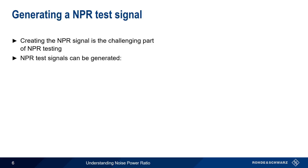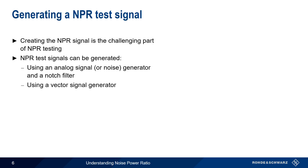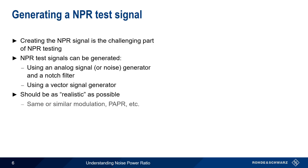There are two main ways of generating a test signal when measuring noise power ratio. The first is using an analog signal generator or noise source combined with an analog notch filter. The second method is using a vector signal generator. Ideally, we want the test signal to be as close as possible to the real signal that passes through the device under test. In other words, we want the same or similar modulation, peak-to-average ratio, etc., since these will affect the level of intermodulation distortion generated by the device.